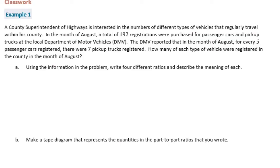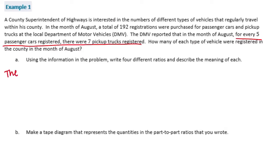Part A wants us to use the information in the problem to write four different ratios and describe the meaning of each. So let's start with finding the ratio within the problem. It said that for every five passenger cars there were seven pickup trucks registered. There are going to be two different types of ratios: part-to-part ratios and part-to-whole. Part-to-part means we're talking about different pieces of the problem. So one of the ratios would be the ratio of cars to trucks.